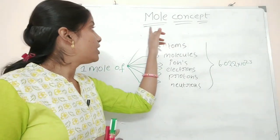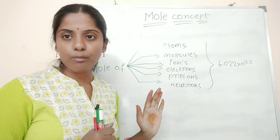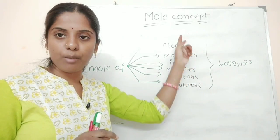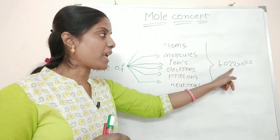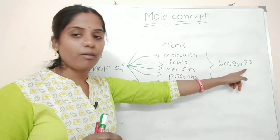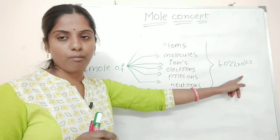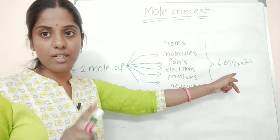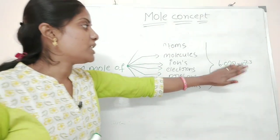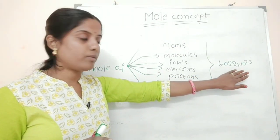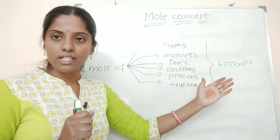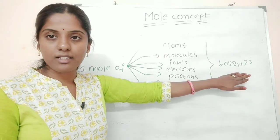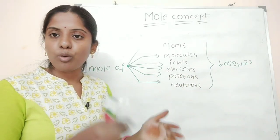A small recap: mole is nothing but a counting number — we can count the amount of substance. That number is 6.022 × 10²³, which is also known as Avogadro's number and Avogadro's constant, represented by capital N subscript A. This number comes from 12 grams of carbon-12 isotope. There are Nₐ atoms in 1 mole of any substance.